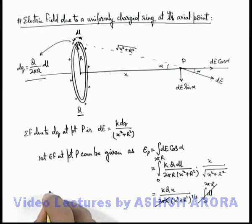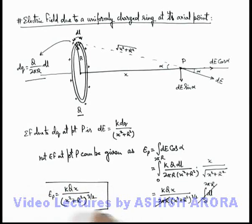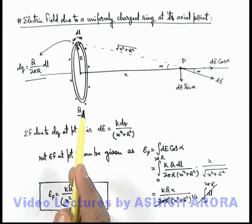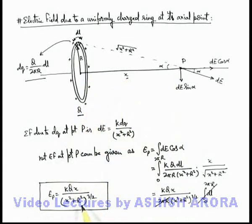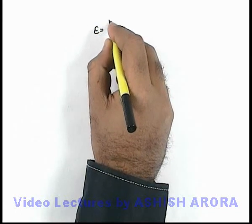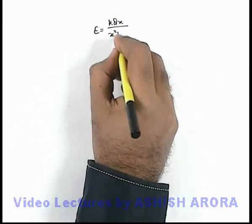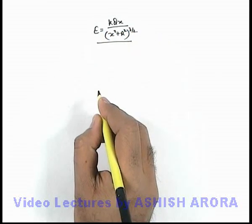So the value of the electric field at point p is given by E = kqx / (x² + r²)^(3/2). This is the result for the electric field due to a uniformly charged ring at an axial point located at a distance x from the center of the ring. We can confirm: E = kqx / (x² + r²)^(3/2) at the axial point.